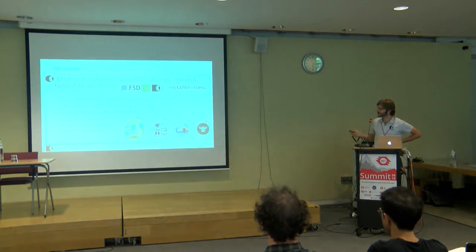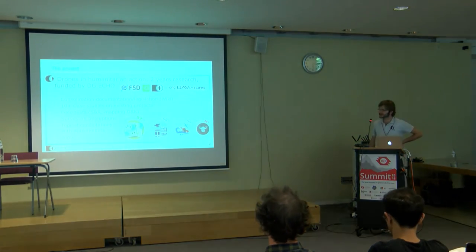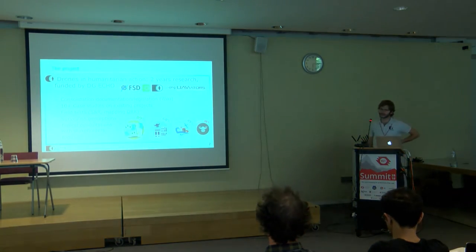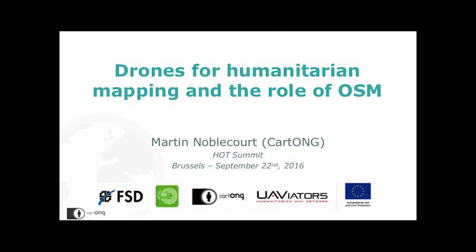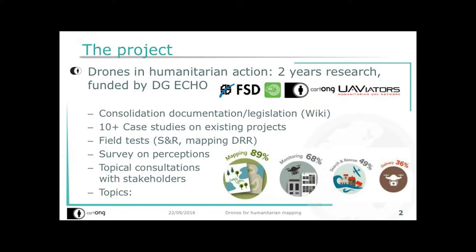I'm part of an NGO called Carto-NJ. We do mapping and GIS for the humanitarian community, mostly supporting NGOs through capacity building. One key part of our job is identifying the tools and data they can use to improve their operations. One of the aspects we've done recently is a research project on how UAVs or drones can be used in humanitarian action.